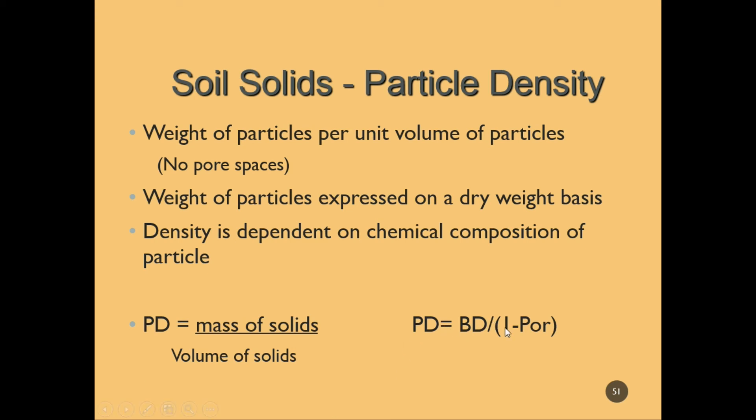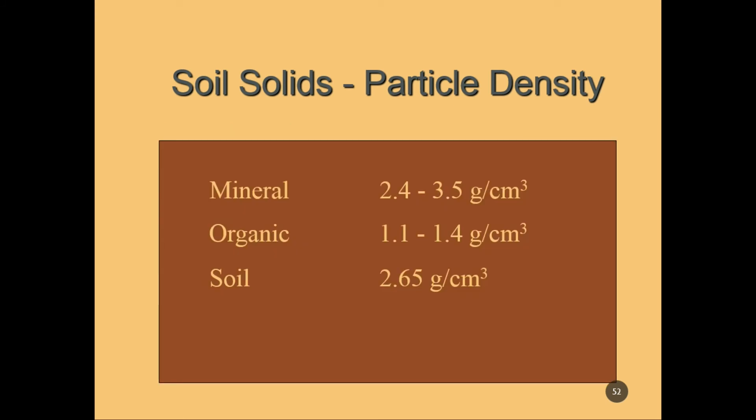Particle density equals bulk density divided by 1 minus porosity, and is dependent on the chemical composition of a particle, expressed on a dry weight basis. Particle density does not change that much, so we can use quick ranges for the mineral and organic portions. In general, we say soil has a particle density of 2.65 grams per cubic centimeter.